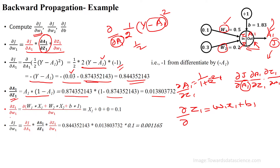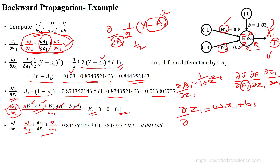For ∂Z1/∂W1, differentiating with respect to W1 means the W2·X2 and bias terms become 0, and the W1·X1 term yields X1. The value of X1 is 0.1. Finally, substituting all values for the full chain rule gives ∂J/∂W1 = 0.00165.